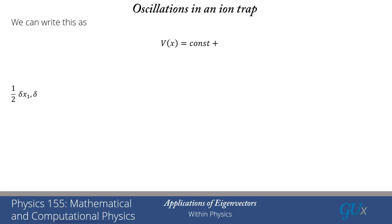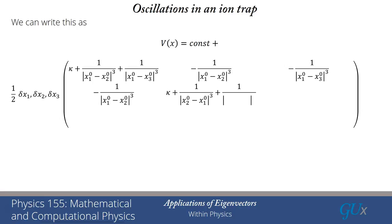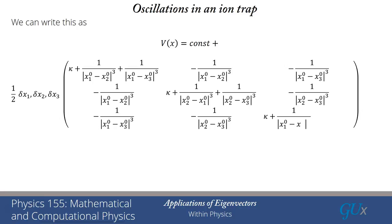We can then write this as a quadratic form: (1/2) times the row vector (δx₁, δx₂, δx₃) multiplying a three-by-three matrix — which is being formed here — and then multiplied by the column vector (δx₁, δx₂, δx₃) on the right. The diagonal terms have the κ term plus terms from the Coulomb potential energies, while the off-diagonal terms involve δxᵢ·δxⱼ contributions. What we really want is to find the eigenvalues and eigenvectors of this matrix — those are the so-called normal modes of the oscillations in an ion trap.